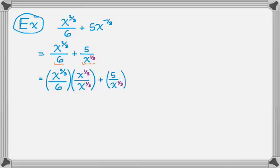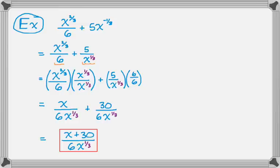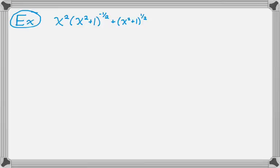This part I multiply by 6 over 6. When I multiply x to the 2/3 times x to the 1/3, I add the exponents, giving x to the 3/3, which is x to the first. The common denominator stays, and then plus 30 over 6x to the 1/3. That gives me x plus 30 over 6x to the 1/3 — or equivalently 1/6 x to the negative 1/3 times the quantity x plus 30 — though for most purposes this form is plenty good.